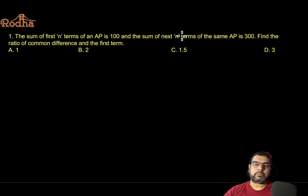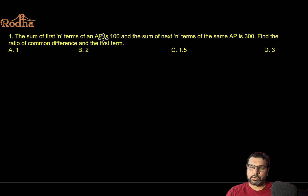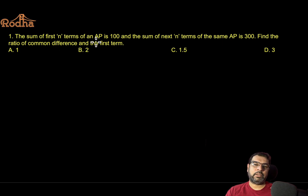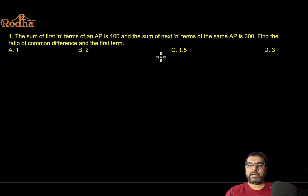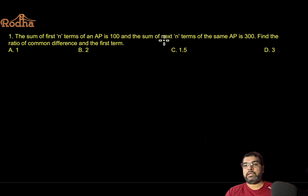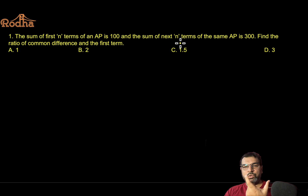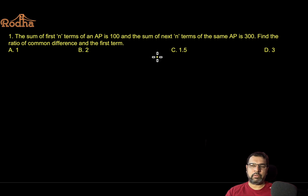The question: the sum of the first n terms of an AP (arithmetic progression) is 100, and the sum of the next n terms of the same AP is 300. Find the ratio of the common difference to the first term. The conventional approach would be to set up two equations using the summation formula — noting that the sum of 2n terms would be 400 — and solve.